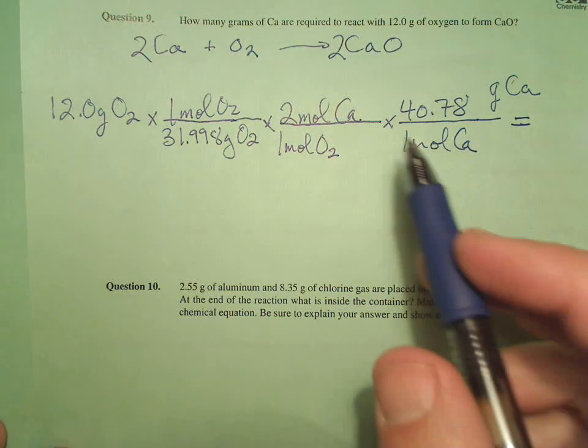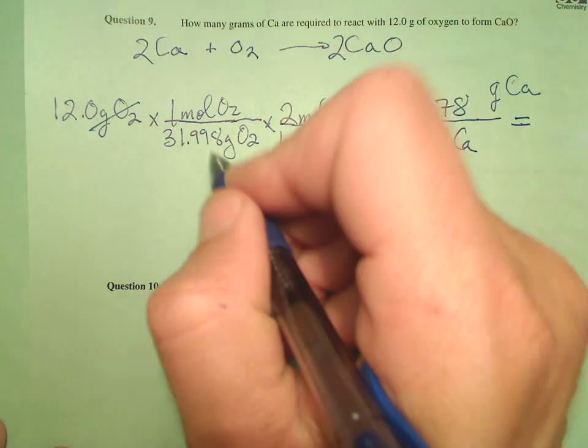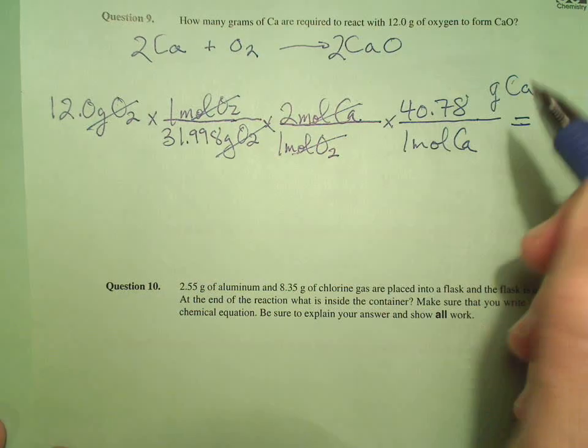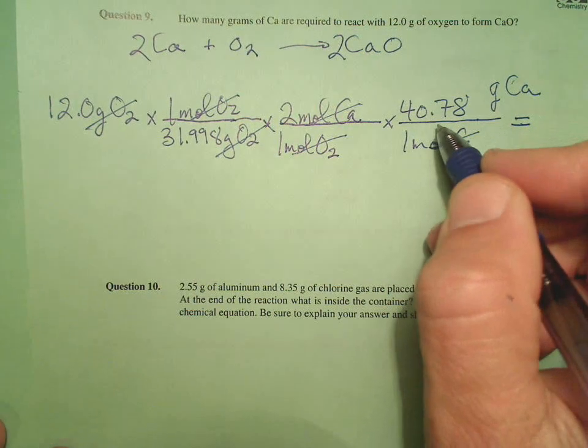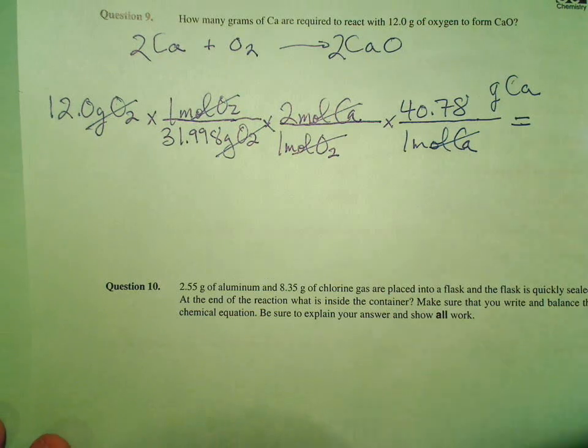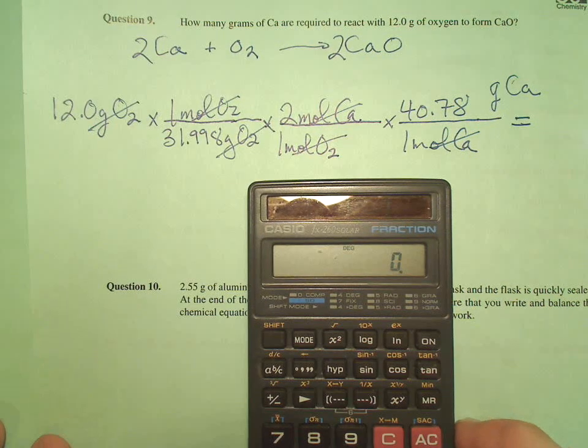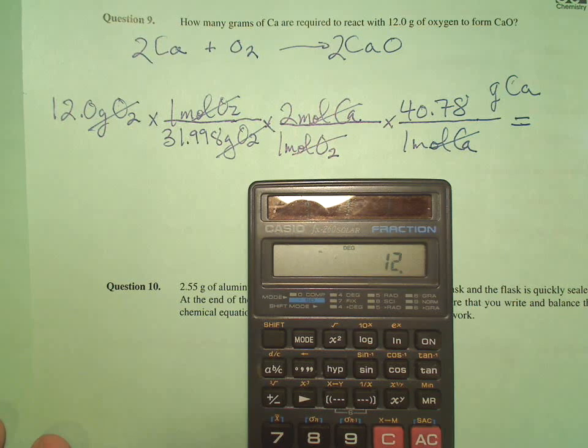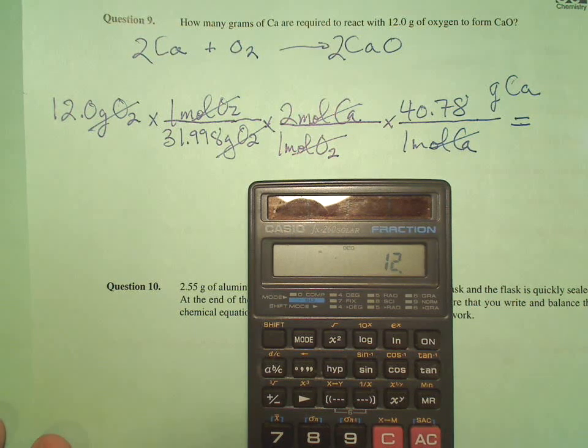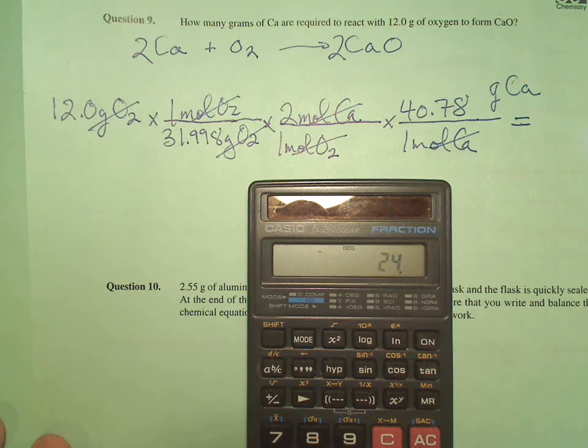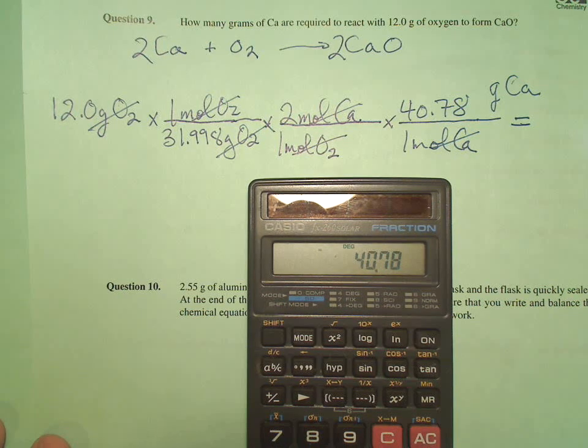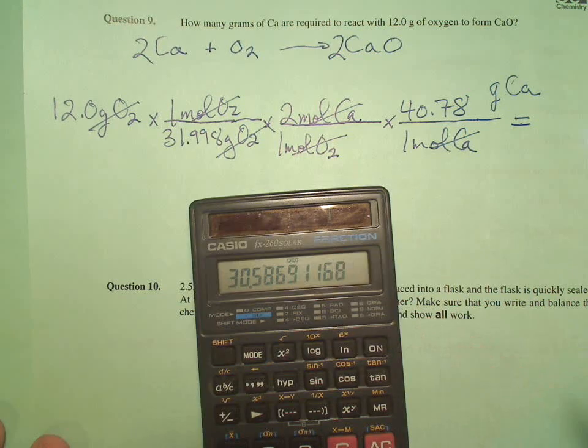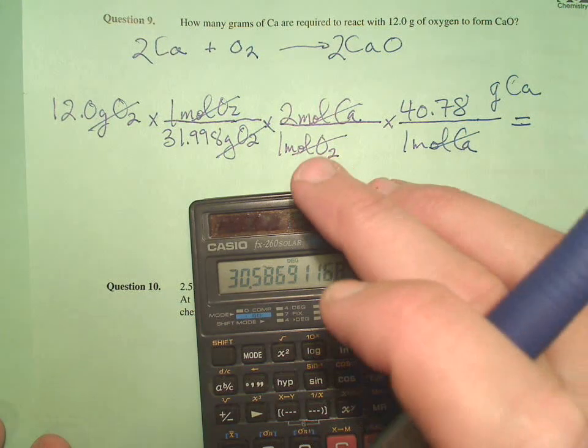Equals. Double check our units: grams O2, grams O2, moles O2, moles O2, moles calcium, moles calcium, grams of calcium. All right, let's go ahead and plug and chug. 12.0 times 2 times 40.78 divided by 31.998. That's just ones on the bottom. Equals.